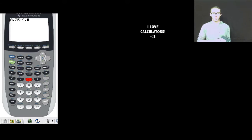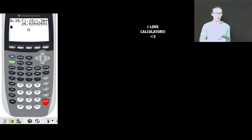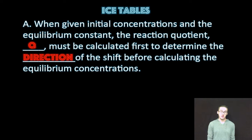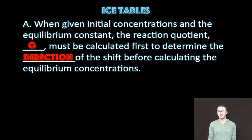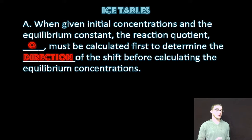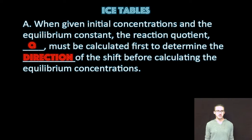0.35 divided by 0.15 times 0.30 squared gives us K equals 26. That was the easier level ICE table. Keep in mind that you will also sometimes be given initial concentrations and the equilibrium constant, which means you'll first have to determine the reaction quotient Q to decide which direction the reaction is going to shift before continuing any calculations using your ICE table.